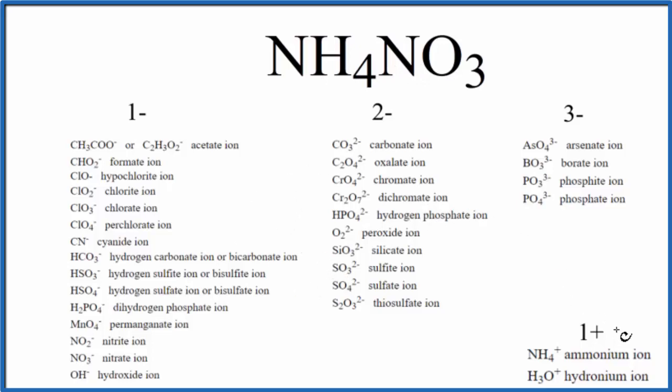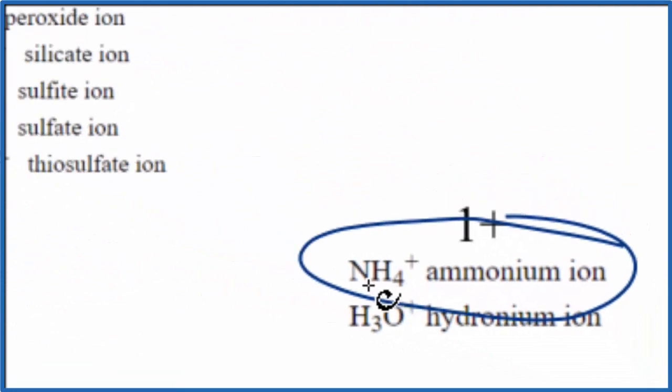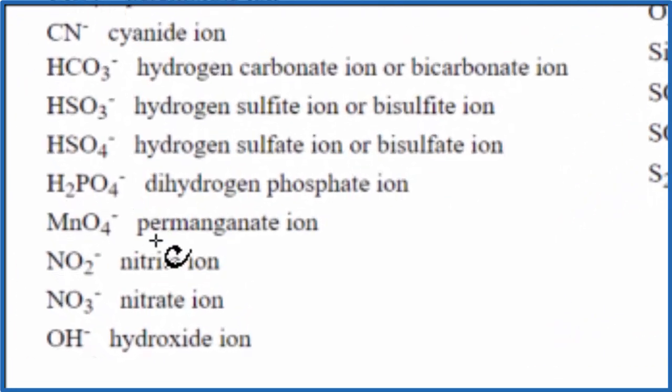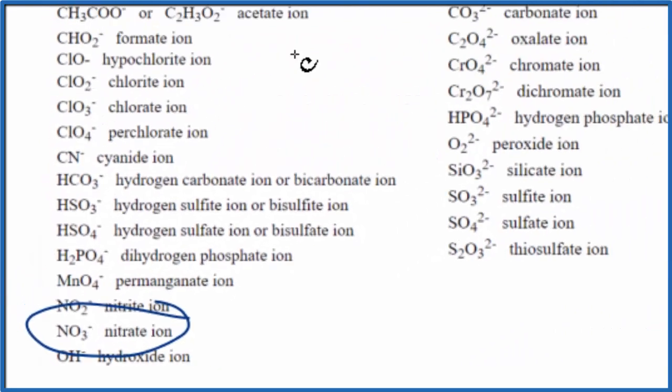So we find ammonium ion right down here, NH4+. So we have ammonium ion, and then nitrate is right here, NO3, and has a negative charge.